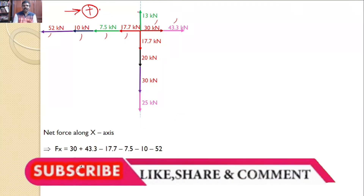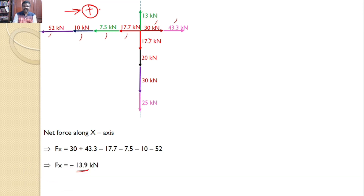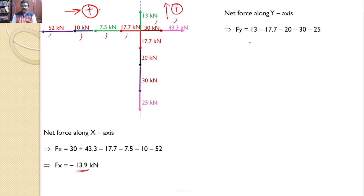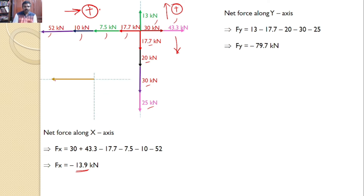Similarly, for the net force along the y-axis: there is only one force acting upward; all other forces act downward. Taking upward as positive: 13, minus 17.7, minus 20, minus 30, minus 25, which gives minus 79.7 kN. The net force is also negative, meaning it acts in the downward direction. So the net x-force is leftward at 13.9 kN and the net y-force is downward at 79.7 kN.